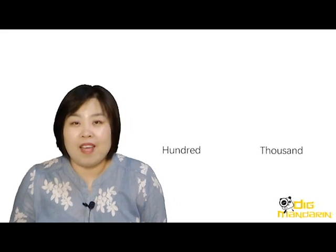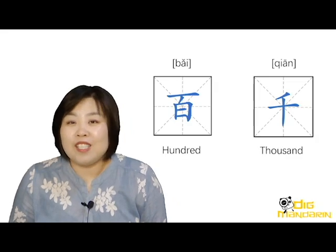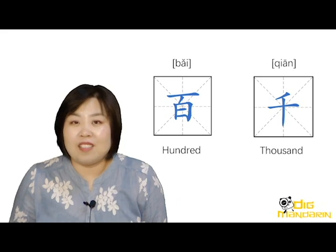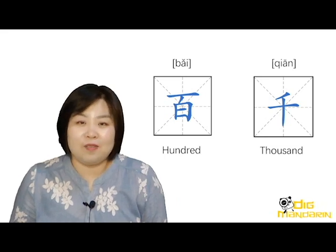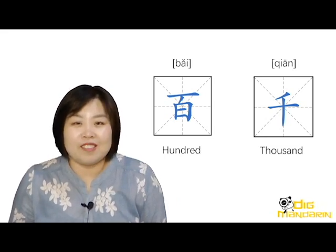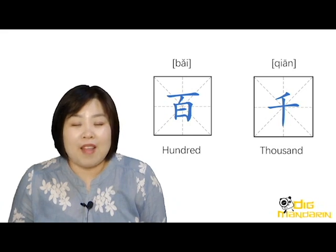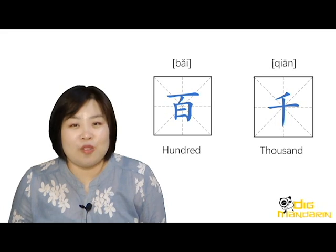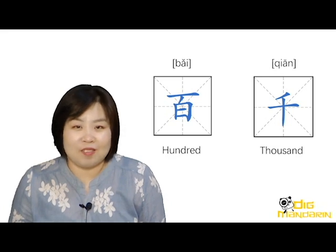Now, if you want to say numbers up to hundreds and thousands, you need these two characters: 百 (bǎi) and 千 (qiān). 百 means hundred and 千 means thousand. Now let's learn how to write these two characters.